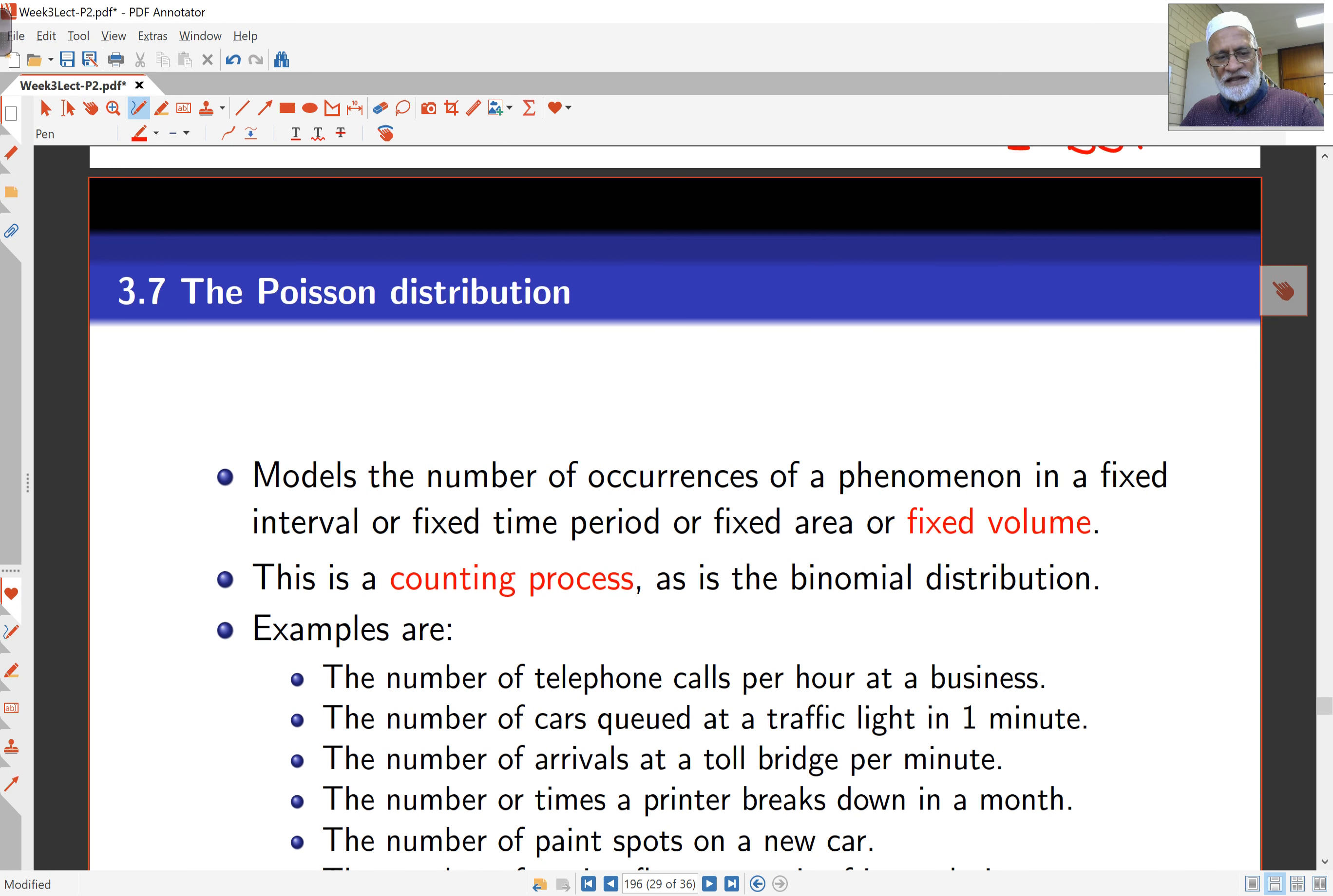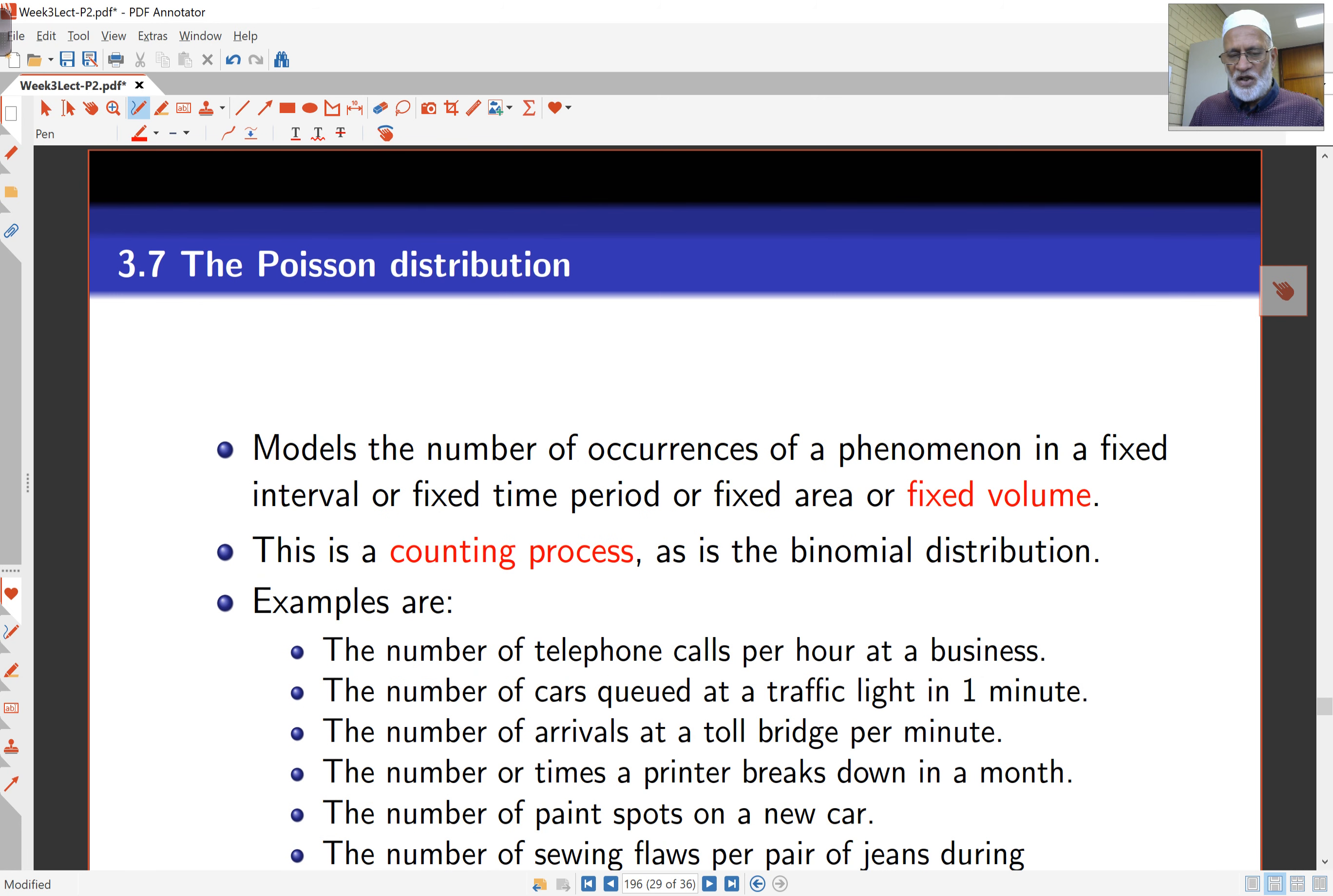So the Poisson distribution is a little different. In this case, the Poisson distribution models the number of occurrences of some phenomenon in a fixed interval, or fixed time period, or fixed area, or fixed volume. Usually we refer to this as volume as a generic word, which can be not necessarily just volume. It could be a length of period of time, it could be an area of land, or any such entity.